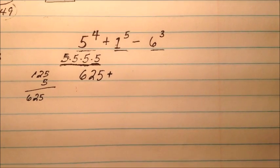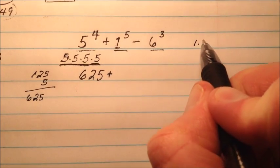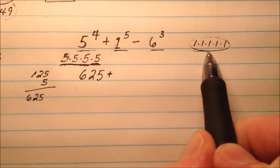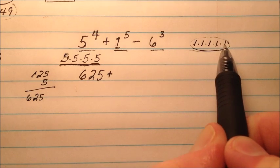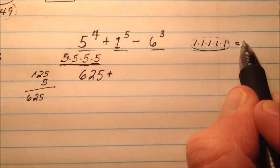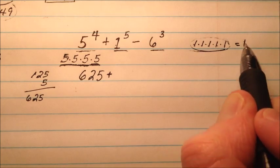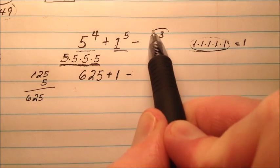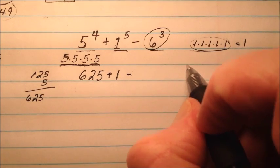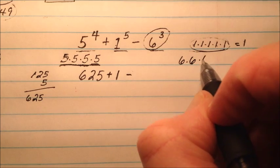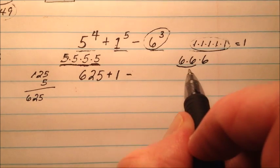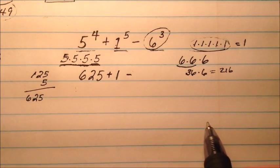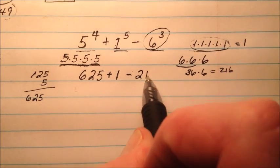Plus, we have 1 to the power of 5 — that's just 1 multiplied by itself 5 times. But it doesn't matter how many 1's you have; 1 times 1 times 1 times 1 times 1 is just going to be 1. So 1 to any power is just 1. Then we're subtracting 6 to the power of 3: 6 times 6 times 6, where 6 times 6 is 36, and times another 6 will be 216. So minus 216.